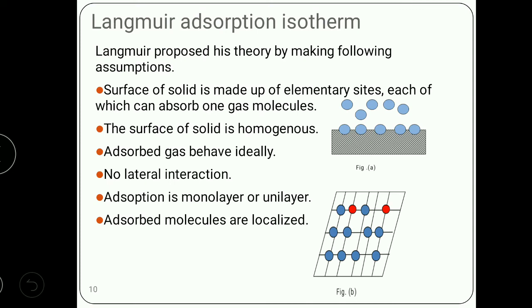To overcome this, Langmuir adsorption isotherm is given. Langmuir proposed his theory by making the following assumptions. He said the surface of the solid is made up of elementary sites — each of these can adsorb only one gas molecule. Langmuir also said that adsorption is monolayer, only one layer is formed, and the surface of the solid is homogeneous. Once gas molecules are adsorbed, they cannot be moved from one place to another, and there is no lateral interaction between adsorbed gas molecules. Adsorbed gas behaves ideally at the vapor phase.